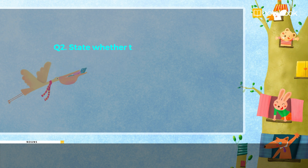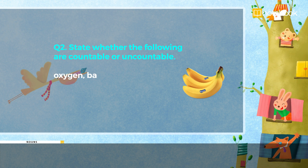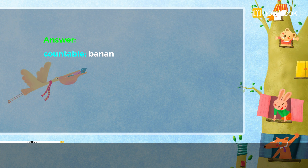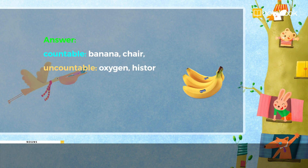Question: State whether the following are countable or uncountable — oxygen, banana, history, ice, knowledge, air, chair. Answers — Countable: banana, chair. Uncountable: oxygen, history, ice, knowledge, air.